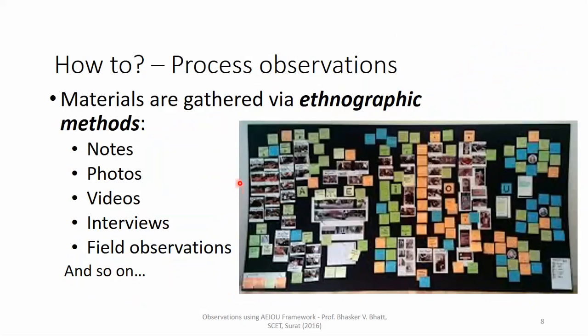For this iterative observation, various means are required. Observations leave behind notes, photographs, video clips, video recordings, talks with users and stakeholders, and field observations to check whether processes are happening appropriately. When all of this is compiled in a structured manner, it is called the ethnographic way of representing observations.